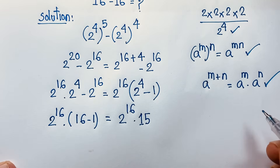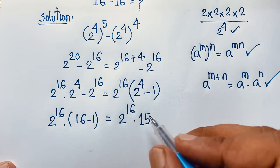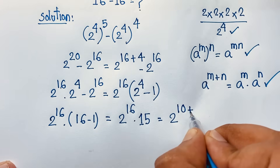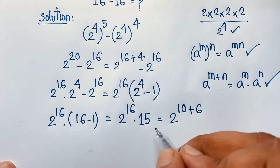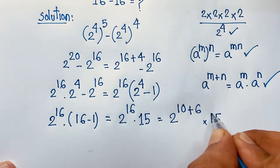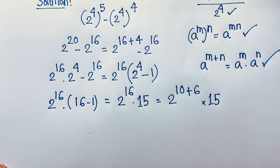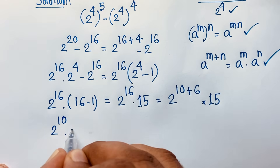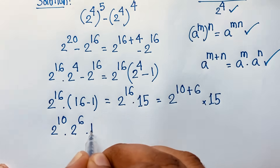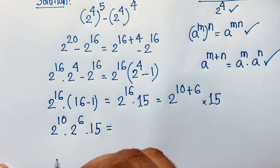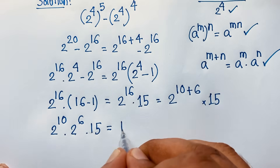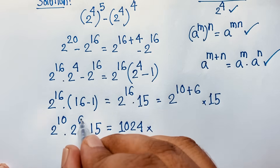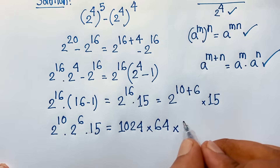Now how to calculate this expression without a calculator. I can write 2 to the power 16 as 2 to the power 10 plus 6. Applying the exponent addition formula, it becomes 2 to the power 10 times 2 to the power 6, times 15. Now 2 to the power 10 equals 1024, and 2 to the power 6 equals 64, and we multiply by 15.